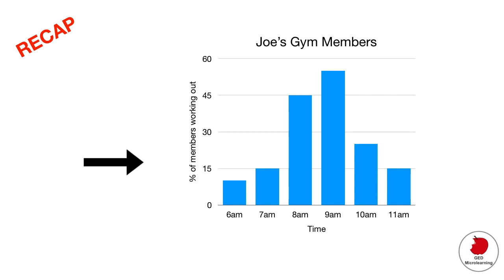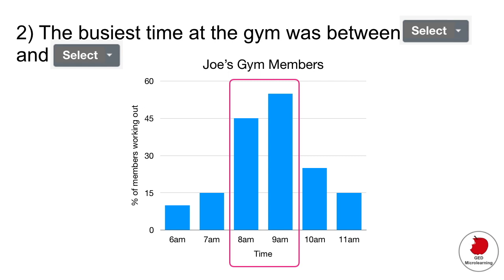So in this case we're looking at members in Joe's gym. The y-axis or vertical axis is telling us what percent of these members are working out. And then the x-axis is telling us at what time these members are working out in the gym. So you can see that at 6 a.m. we have about maybe 10 percent of members working out and at 7 it's 15 percent. All right so the question asks you what were the busiest times. So you can see that it was between 8 a.m. and 9 a.m.